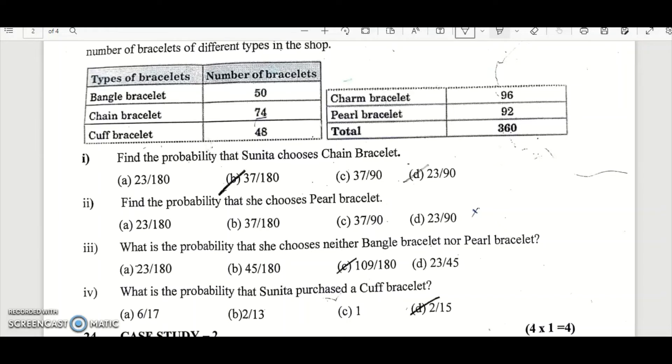So find the probability that Sunita chooses chain bracelet. So how many chain bracelets we have? 74. And total bracelets are 360. So it would be 74 by 360 that would be 37 by 180. Option B is the right answer.